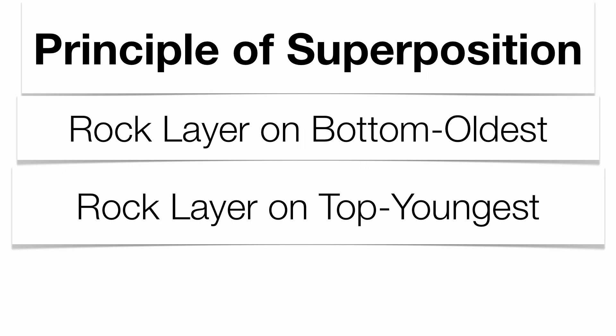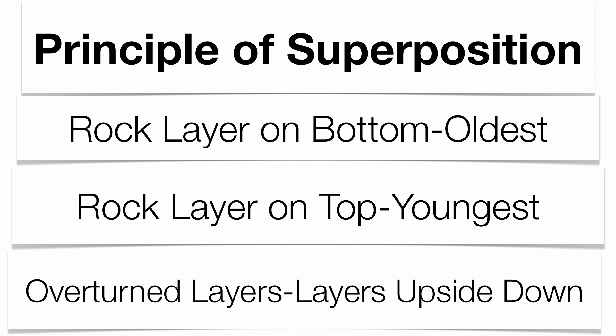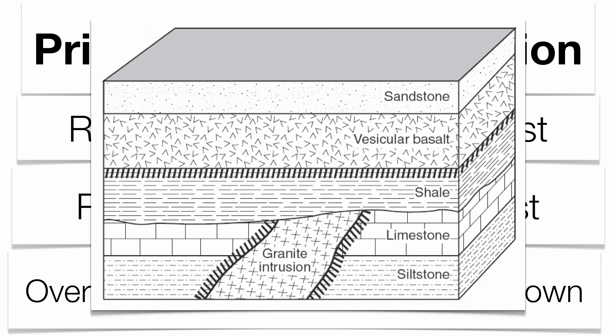That leads us to the principle of superposition, which states that the rock layer on the bottom is the oldest and the rock layer on top is the youngest. Sometimes layers get overturned, meaning turned upside down — in that case the youngest would be on the bottom and the oldest on top, but the Regents exam has to let you know if that actually happens. So the youngest is on top, oldest on the bottom.